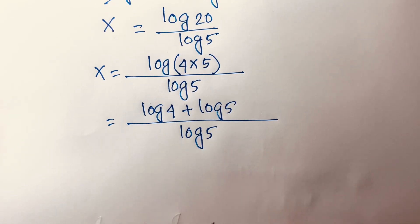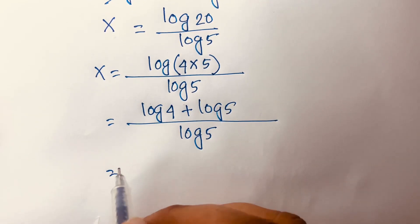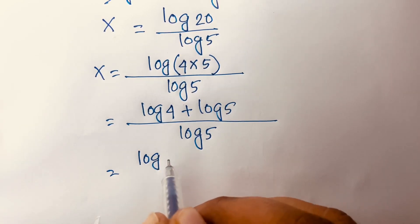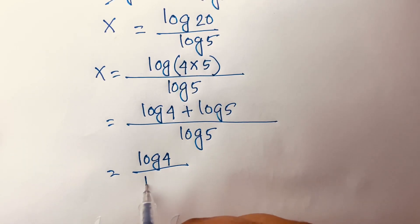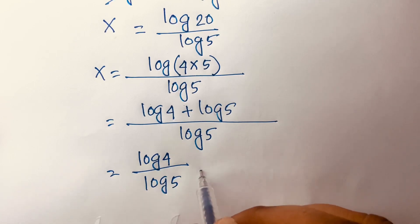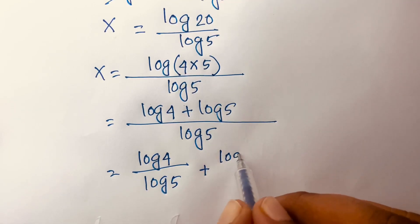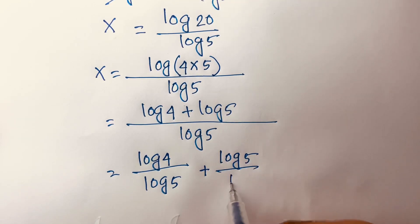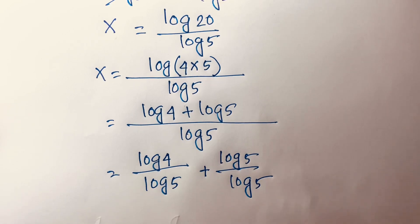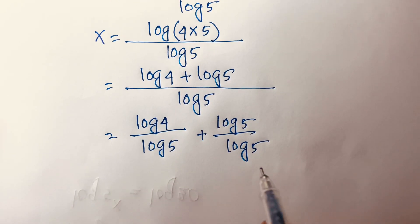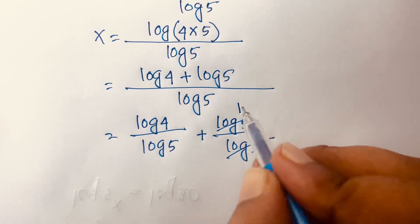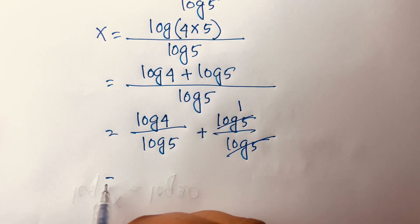Then this equation becomes log4/log5 + log5/log5. Then I can see easily here log5/log5 cancels, here is 1.